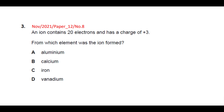The next question says an ion contains 20 electrons and has a charge of plus 3. The important words to underline are: ion, 20 electrons, and charge of plus 3. Since the ion has a plus 3 charge, it means it lost 3 electrons. So the neutral atom originally had 20 + 3 = 23 electrons.